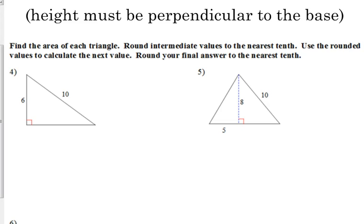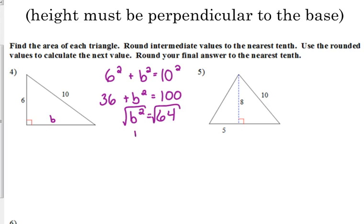So, we need to use our Pythagorean theorem to find that base. So, at the risk of having a 6 and a B in my problem, I'm going to use a B since that's the base right there. So, 6 squared plus B squared is equal to 10 squared. So, we've got 36 plus B squared is equal to 100. When we subtract 36, we get 64.